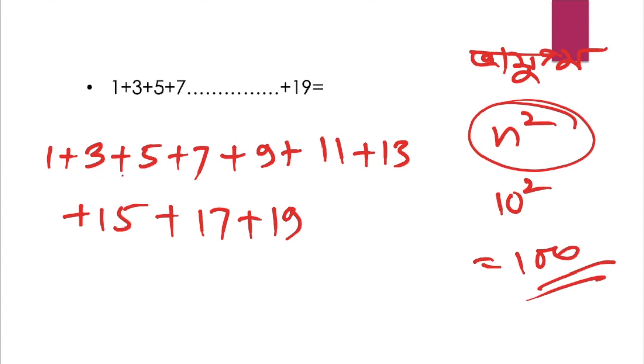1 squared is equal to 9. 1 squared is equal to 9. Then 2 squared is equal to 27.